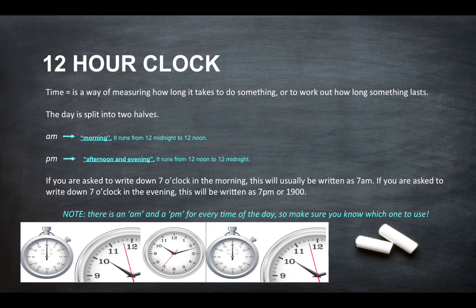So if you were asked to write down 7 o'clock in the morning, this will usually be written as 7am. If you were asked to write down 7 o'clock in the evening, this will be written as 7pm or 1900. This is military time and I will give you some more information on this a bit later.